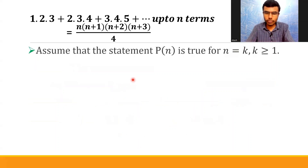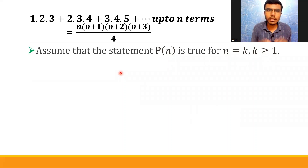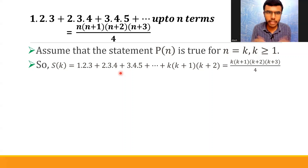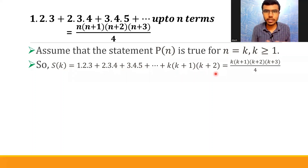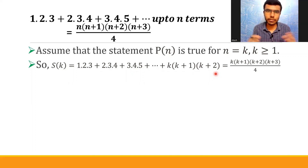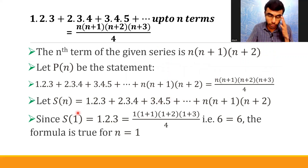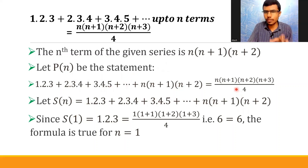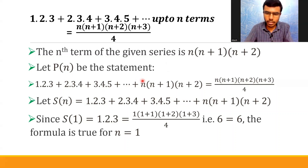Assume that the given statement is true for n=k, where k ≥ 1. Don't forget it. Since the given statement is true for n=k, I can write S(k) as: 1×2×3 + 2×3×4 + ... + k(k+1)(k+2). In place of n, I put k. And on the RHS I get k(k+1)(k+2)(k+3)/4. Because S(n) = n(n+1)(n+2)(n+3)/4, and I've just put n=k.